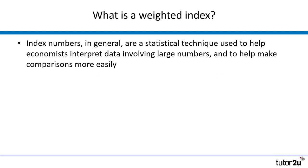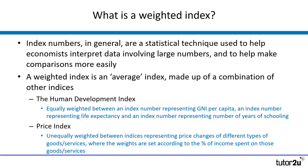So what do we mean by a weighted index? Well, as a reminder, an index number is just a very simple statistical technique that allows economists to interpret data that uses large numbers, and allows us to make comparisons between different pieces of data much more easily and quickly. A weighted index takes that idea and just combines a number of indexes or indices together — it is simply an average index made up of a combination of other indices.